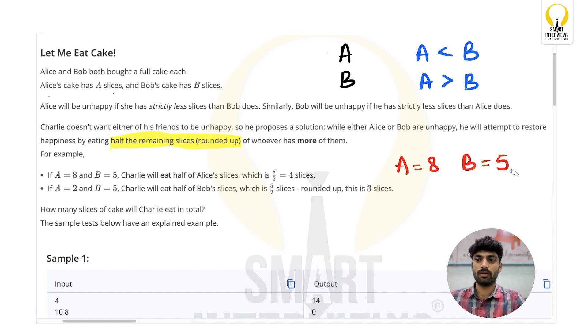The example here is A is 8 and B is 5. So who is unhappy? Bob is unhappy right, because Alice has more slices. So now Charlie tries to eat from Alice's cake, but how many slices? Half of them. And this is the important one which is rounded up here. Half of 8 is 4, so Charlie will try to eat 4 slices from Alice's cake.